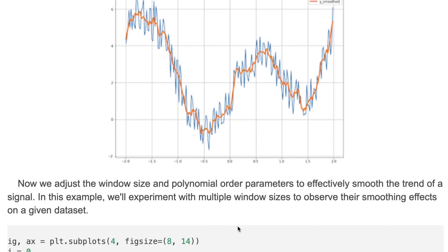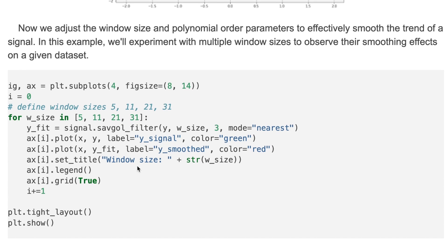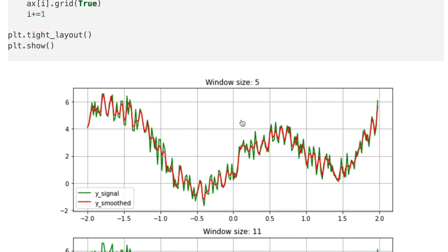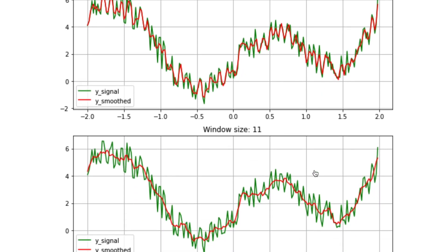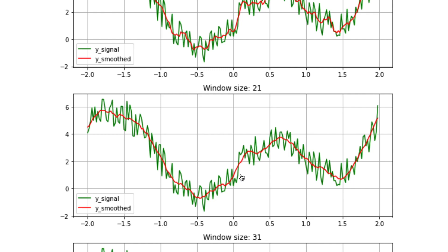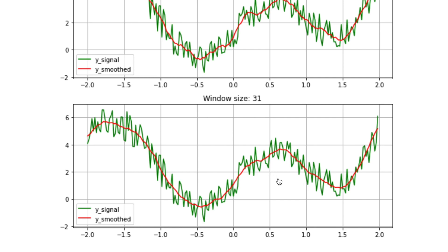Now we can adjust the window size and polynomial order parameters to effectively smooth the trend of the signal. In this example, we'll experiment with multiple window sizes to observe their smoothing effects on a given data set. Here we define the window sizes and loop through all window sizes and visualize them in graphs. With a window size of 5, there is some fitting applied; window sizes 11 and 21 get progressively smoother; and window sizes 31 and above show a clear smooth trend.